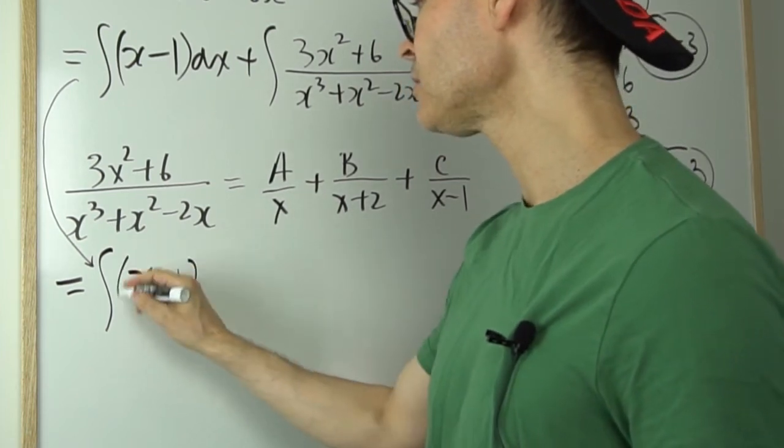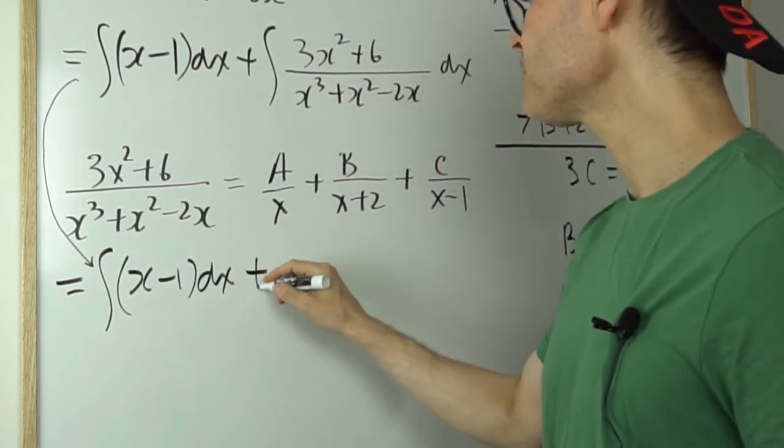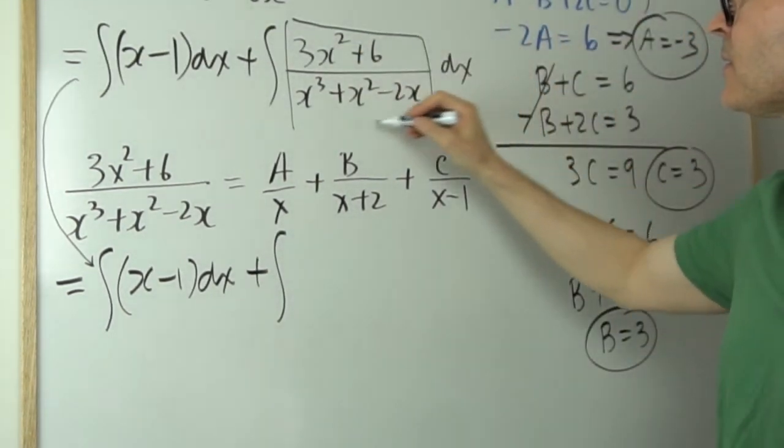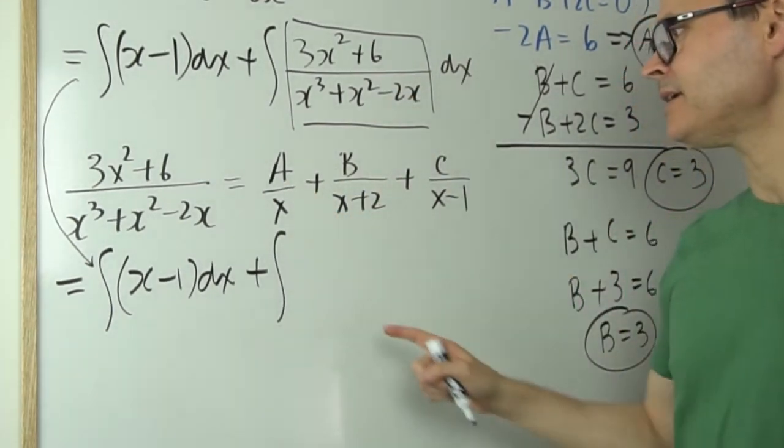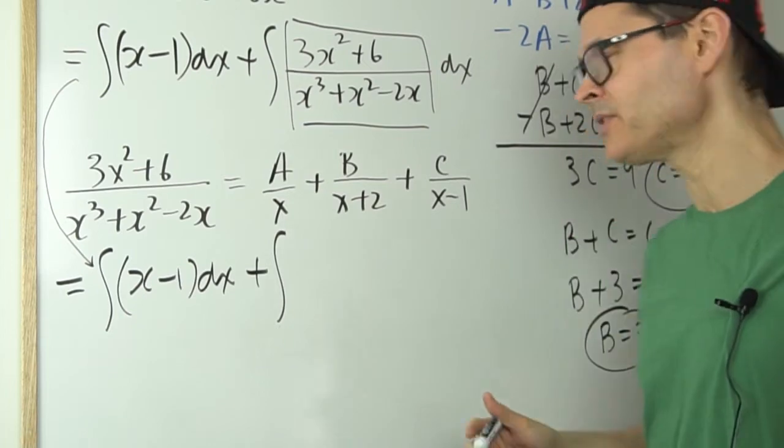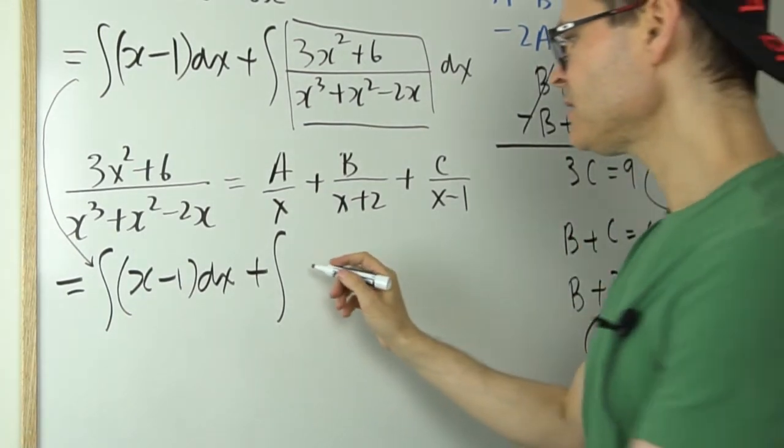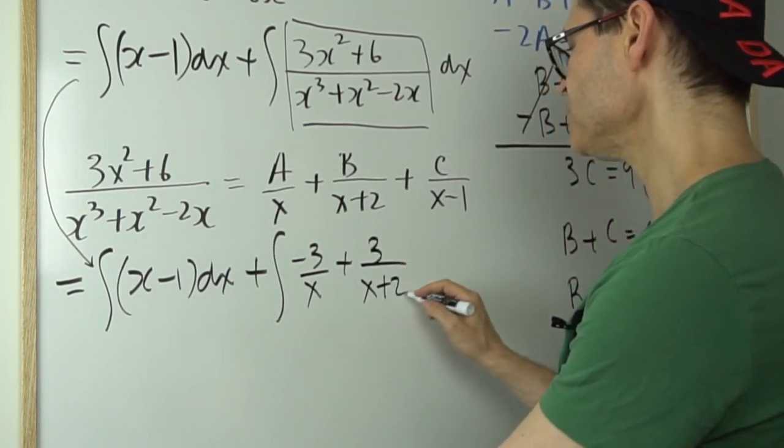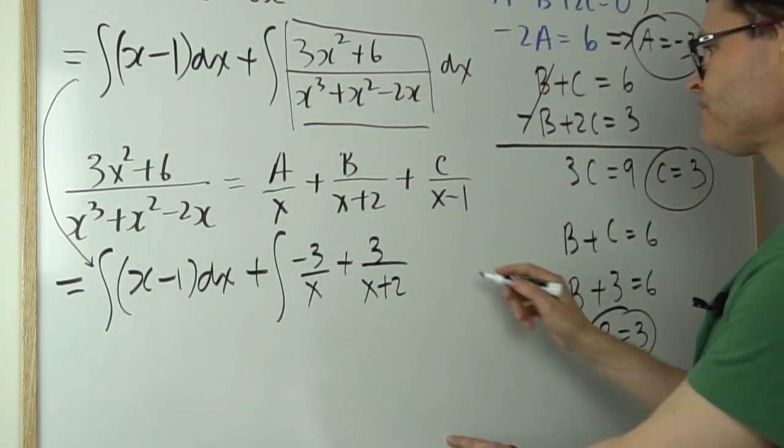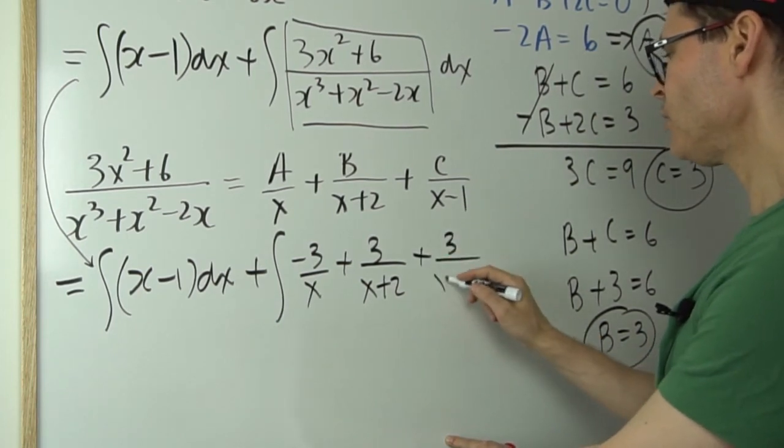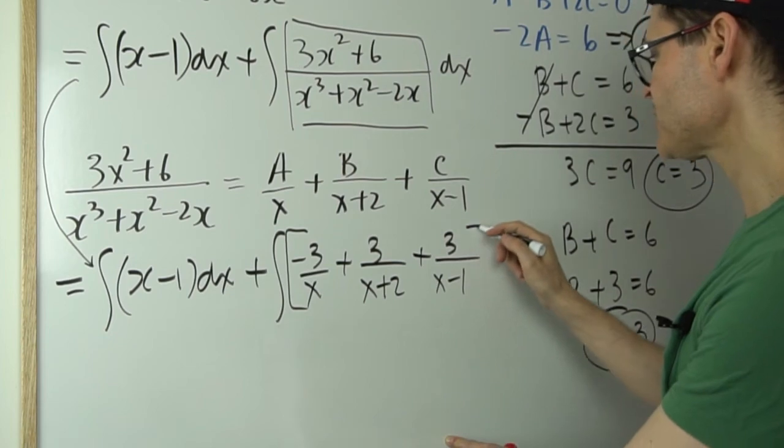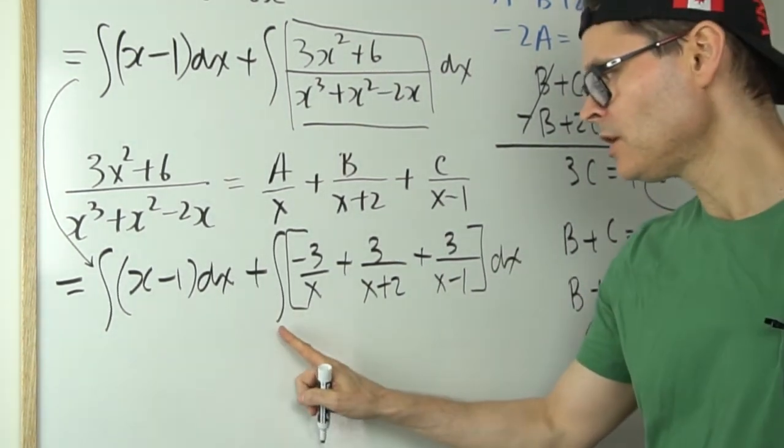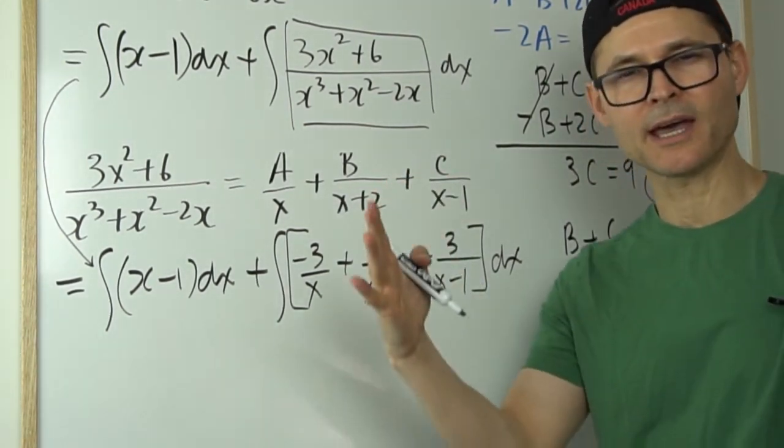So x minus 1 dx plus, now watch what I do. Instead of writing all of this, I'm going to put my A, B, C in. And look, these are set up to be natural logs when you integrate. How nice is that? So my A is negative 3. So negative 3 over x, plus 3 over x plus 2. B turned out to be 3. And so did C. So 3 over x minus 1. Don't forget your dx, your teacher will get upset. You have to have a dx, remember, because if you have an integral, the integral symbol with the dx are like bookends. They have to go together.